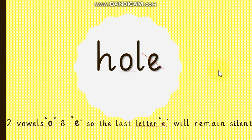The next word is HOLE. As you can see, there are two vowels in this word. Whenever there are two vowels together in a word, the last letter E will remain silent, and the first vowel you are going to name — O is here. Let's blend it — HOLE. The word is HOLE. Very nice.